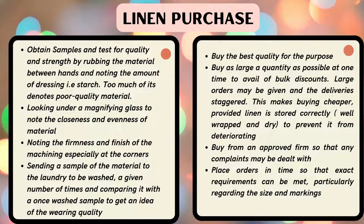Regarding linen purchase, we have to keep certain points in mind. Obtain samples and test for quality and strength by rubbing the material between hands and noting the amount of dressing (starch) — too much of it denotes poor quality material. Look under a magnifying glass to note the closeness and evenness of the material. Note the firmness and finish of the machining, especially at the corners. Send a sample to the laundry to be washed a given number of times and compare with the unwashed sample to assess wearing quality. Buy the best quality, buy as large a quantity as possible at one time to get bulk discounts — large orders may be given with staggered delivery, making buying cheaper, provided linen is stored correctly, well wrapped and dry.